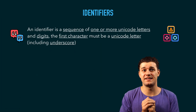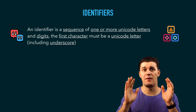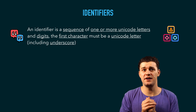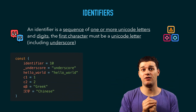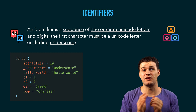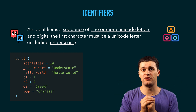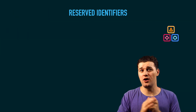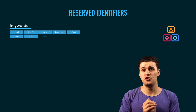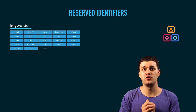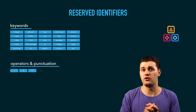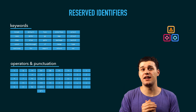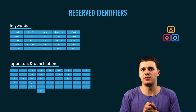Speaking of identifiers, they work exactly as in any other language. You have a bunch of Unicode letters and numbers, but the first character must be a Unicode letter or an underscore. Here's an example of identifiers — you could also use Chinese characters, which is not a problem for the compiler because it does UTF-8 encoding before compiling your code. You should also be aware of punctuation and keywords used in the language, as those will conflict with your identifier if you name it that way.